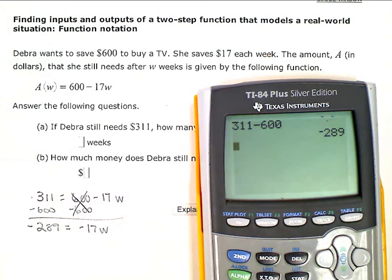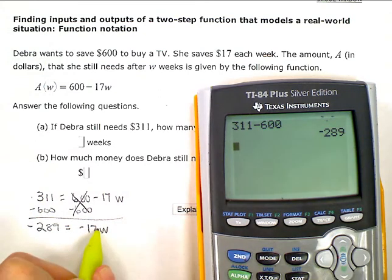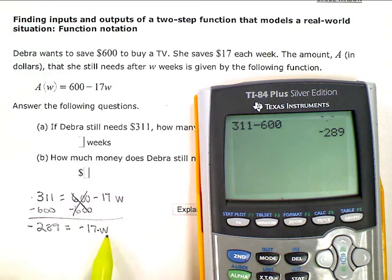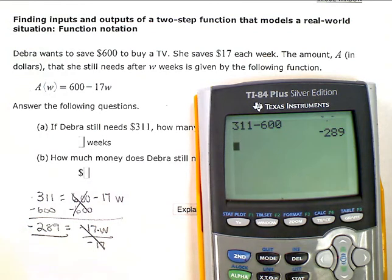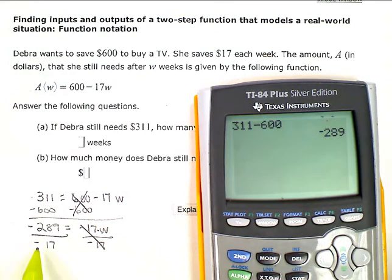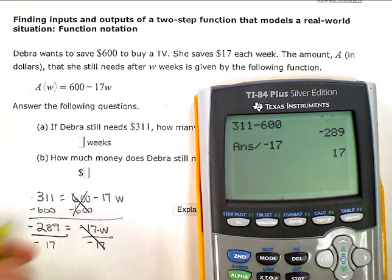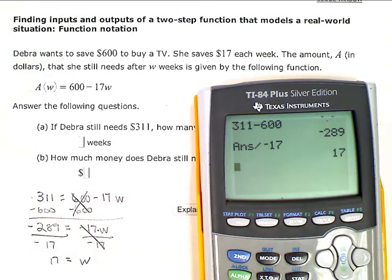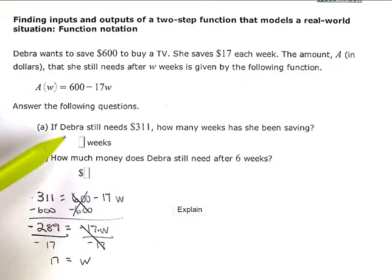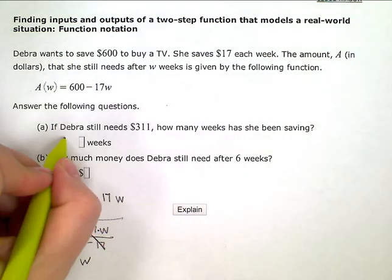Then I'm going to, remember this is implied multiplication right there, negative 17 times w. The inverse is divide by negative 17 to get rid of that. And to keep my equation balanced, I have to do the same thing on the other side. So if I do negative 289 divided by negative 17, I get positive 17. So 17 equals w. So how many weeks has she been saving? We got 17 weeks.